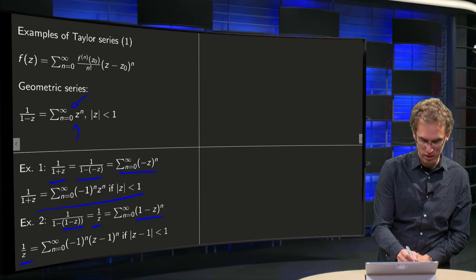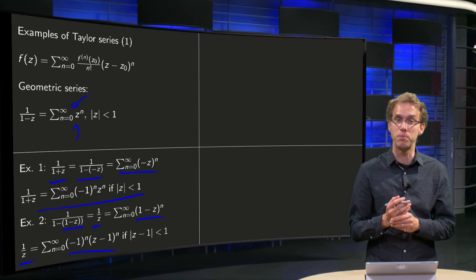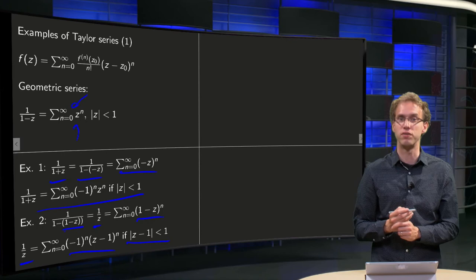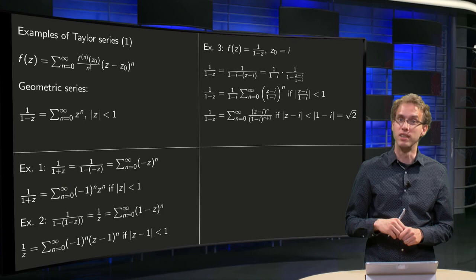So we got 1/z equals sum n from 0 to infinity (-1)^n times (z-1)^n, which converges if we substitute also 1-z in the condition for convergence, which converges if |z-1| < 1.